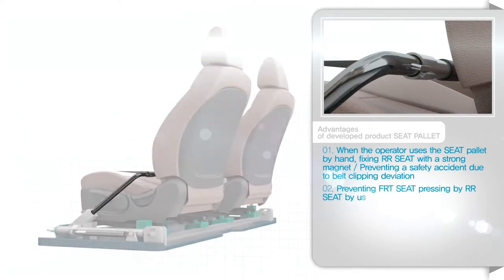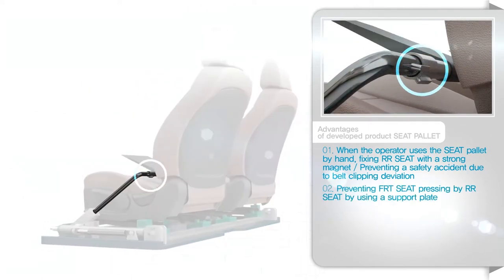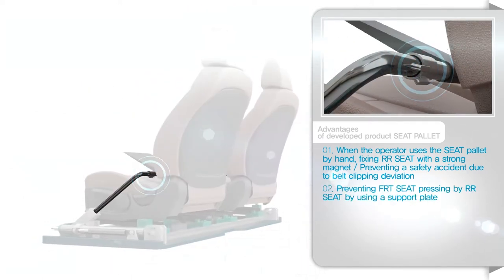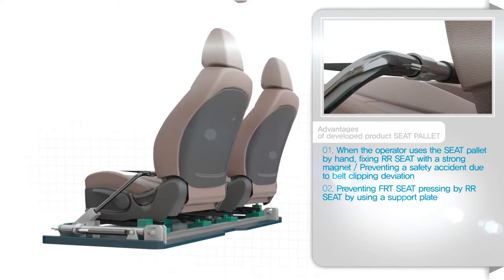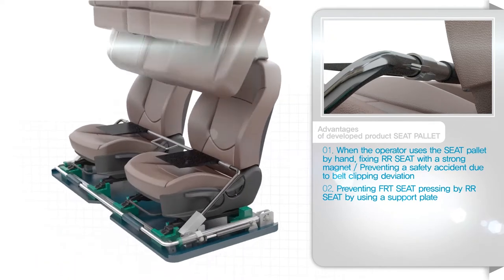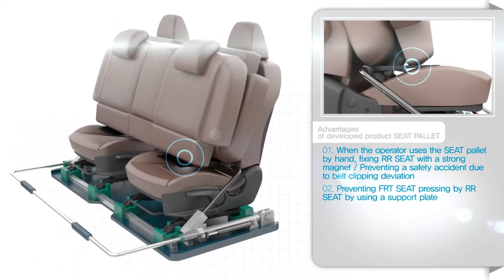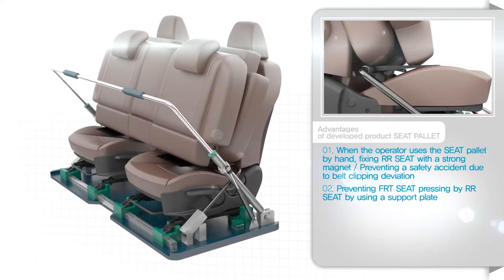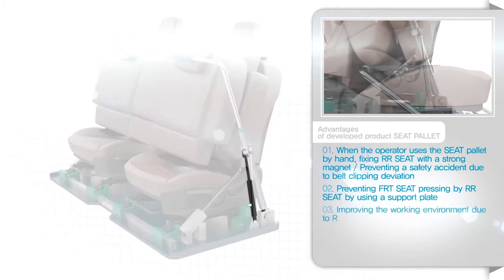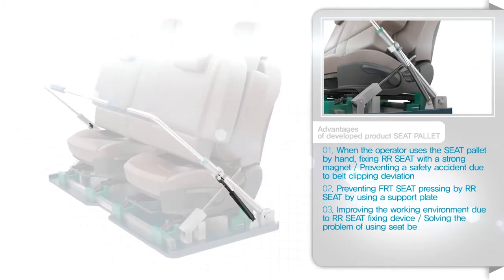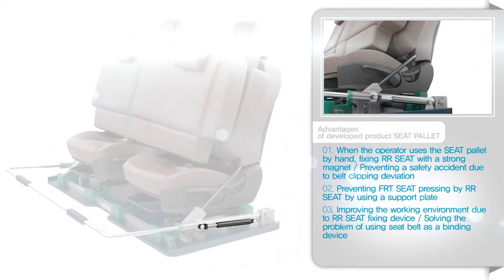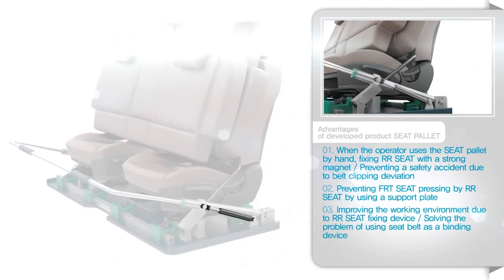A support plate used between the rear seat and the front seat prevents seat pressing. The rear seat fixing device improves the working environment and eliminates the problem of seatbelt use.